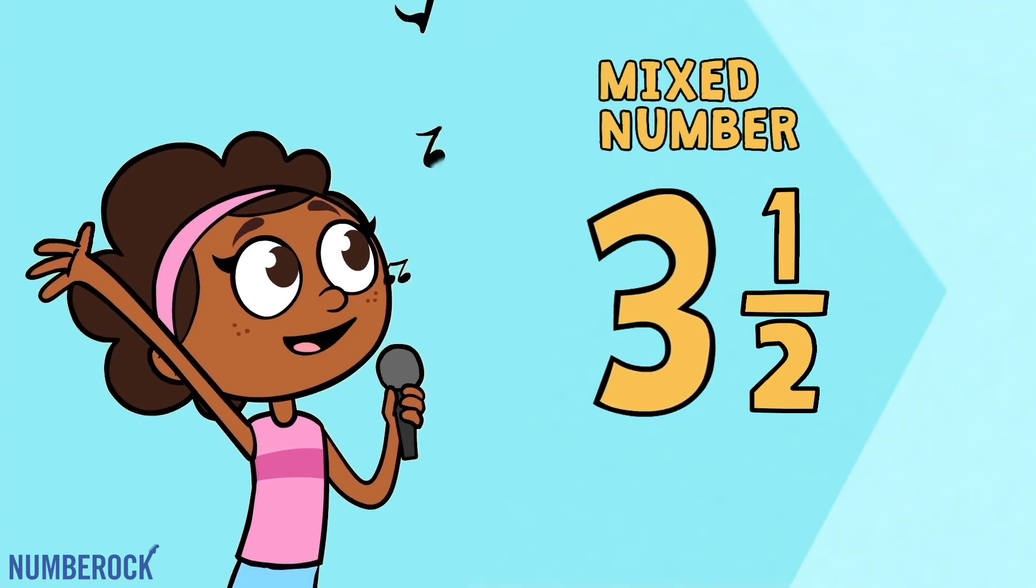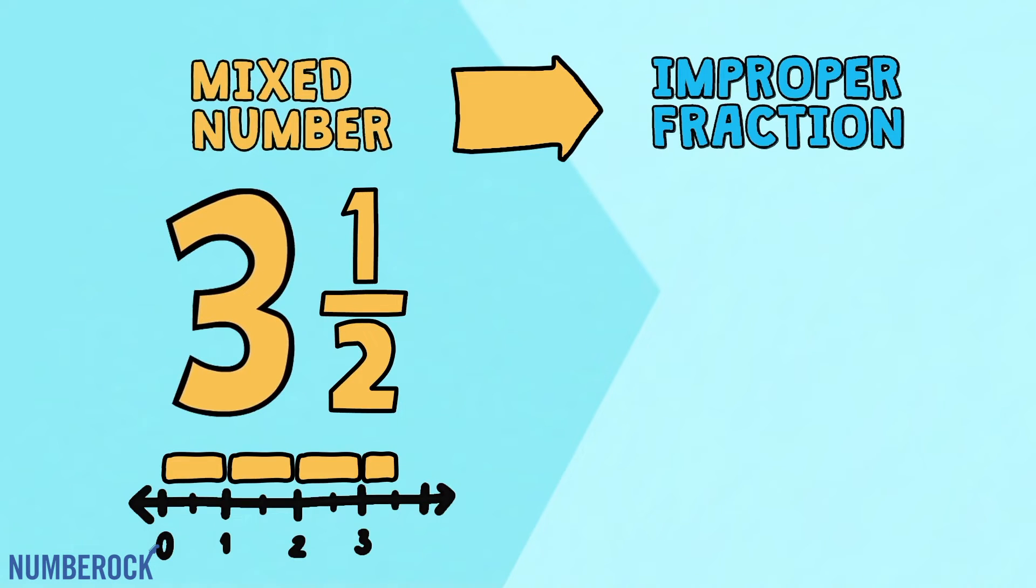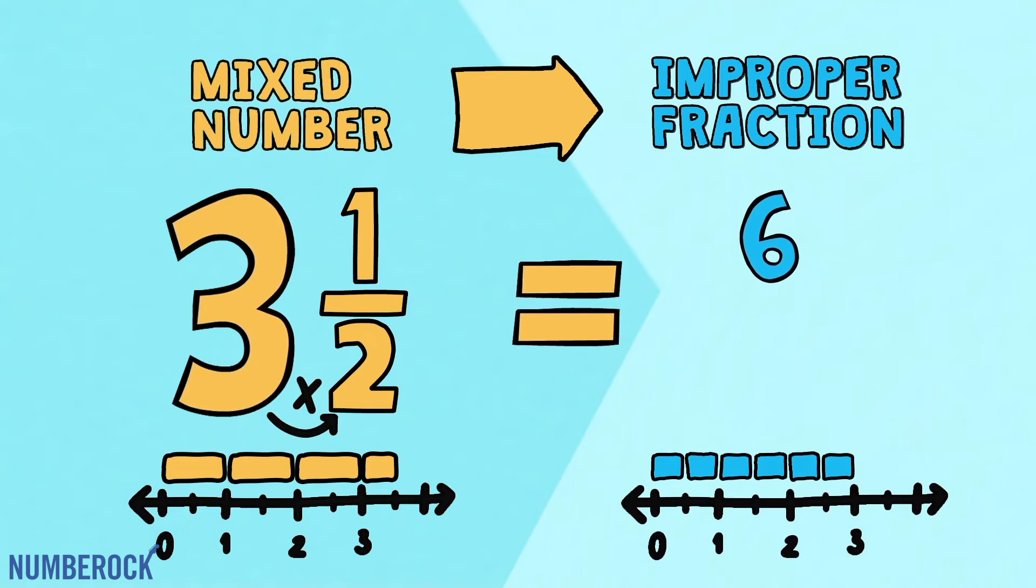To convert a mixed number to an improper fraction, three simple steps will give you that satisfaction. Multiply the whole number by the bottom, then add to the top.